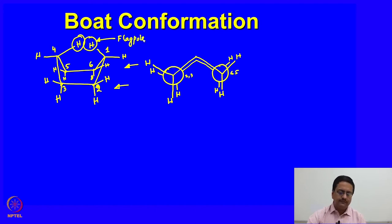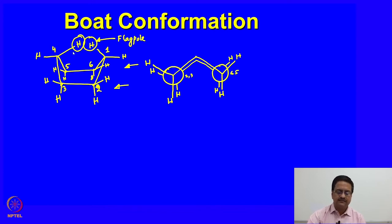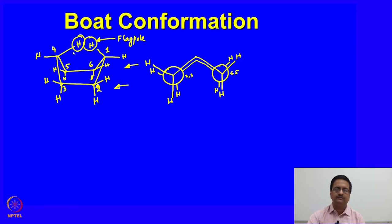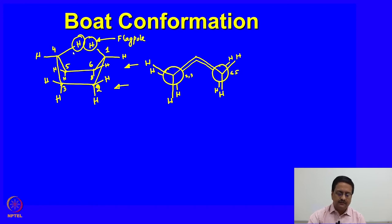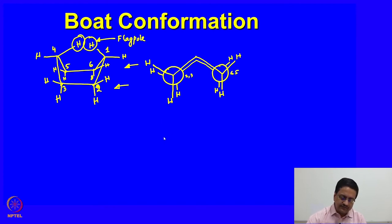These hydrogens which are close in the boat conformation — we call those two hydrogens flagpole. Because of those flagpole hydrogens being very close, this conformer is unstable compared to the chair conformation, and it always tries to go to the chair conformation from the boat conformation. When the transformation tries to happen, the molecule goes through a different conformer called a twist-boat.